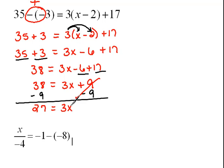And now we can undo this multiplication. The opposite of multiplying by 3 would be to divide both sides by 3. So we're left with 27 divided by 3 is 9 equals x.